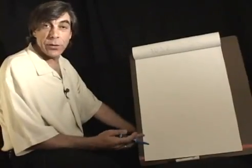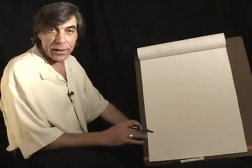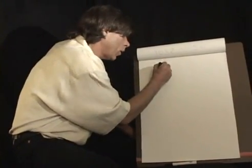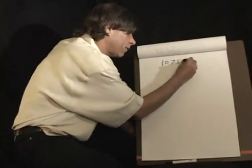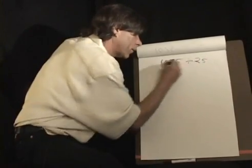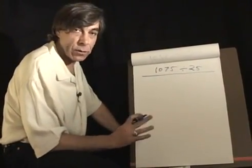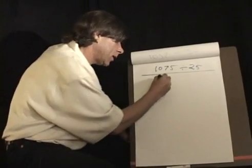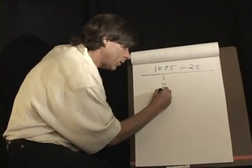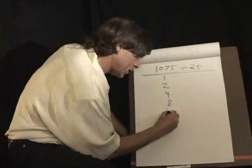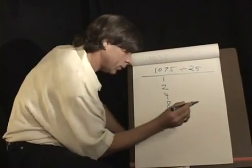Now division in computers or in ancient Egypt is just the opposite of multiplication. It's the inversion. So let's say we wanted to divide 1,075 by 25. And we don't want to use the multiplication table, nor do we want to use any kind of long division. And the way to do it is like this. Simply write out the powers of 2: 1, 2, 4, 8, 16, 32, and so forth.